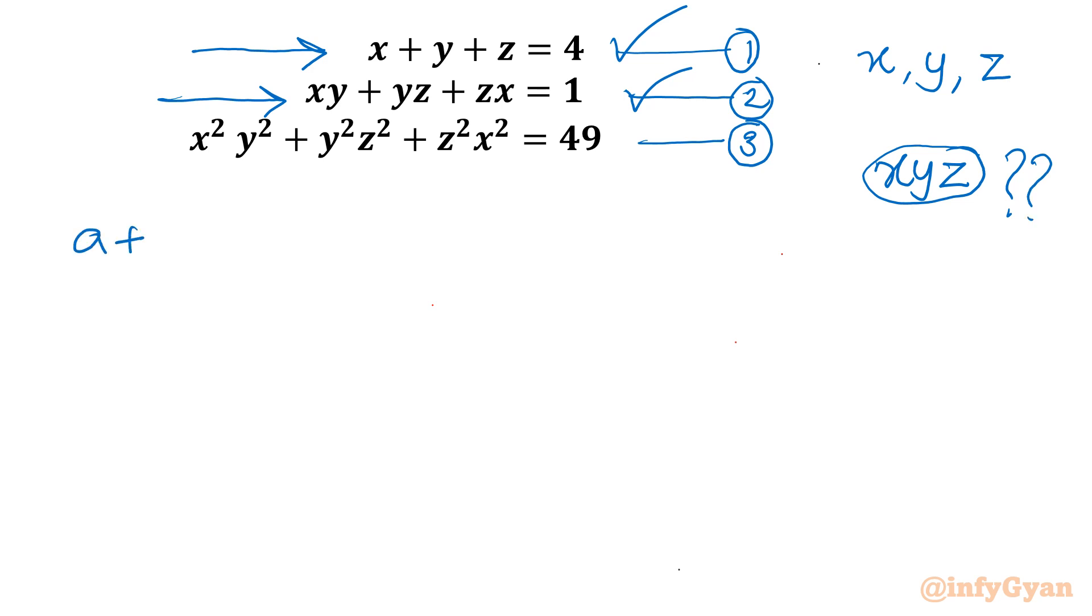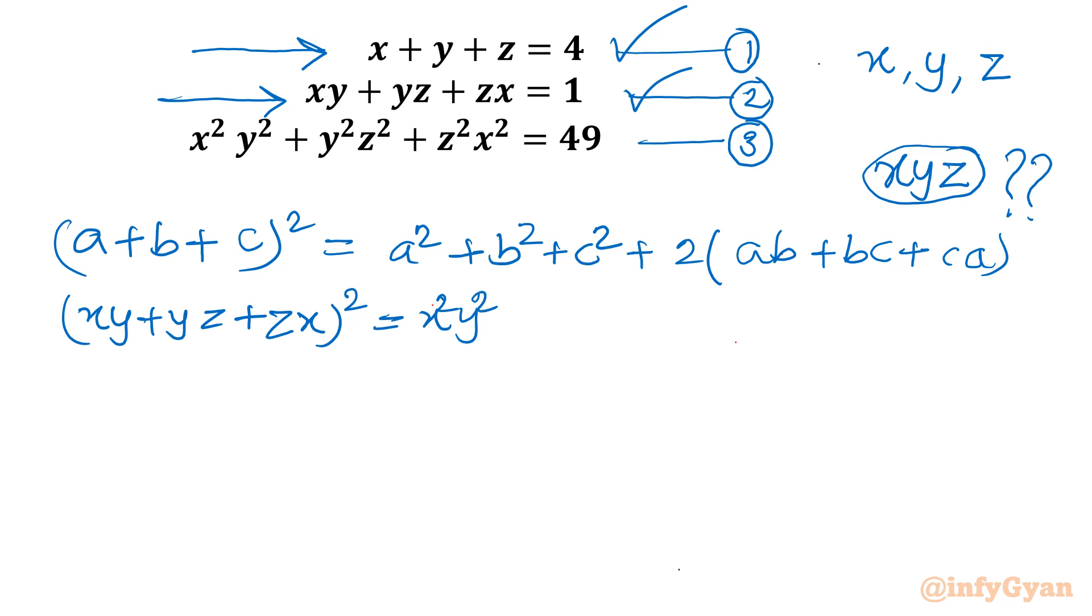For that purpose I will begin with one algebraic and powerful identity: a plus b plus c whole squared equals a squared plus b squared plus c squared plus twice ab plus bc plus ca. So from equations 2 and 3, if I consider xy plus yz plus zx whole squared, then I need to write x squared y squared plus y squared z squared plus z squared x squared.